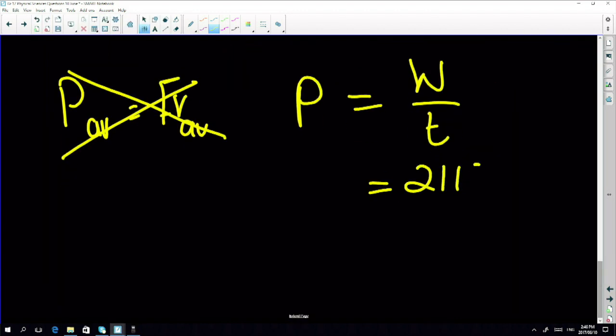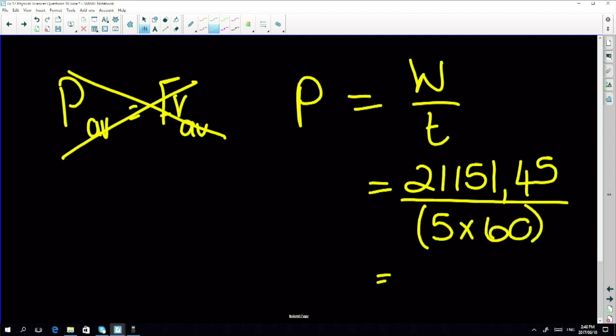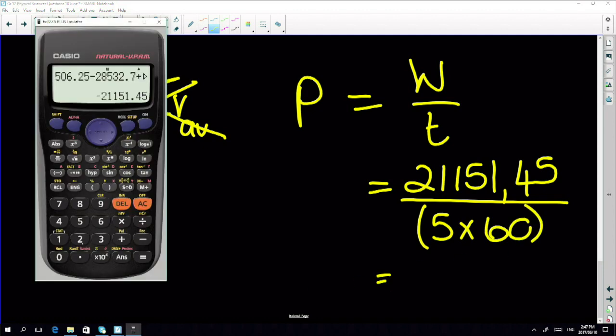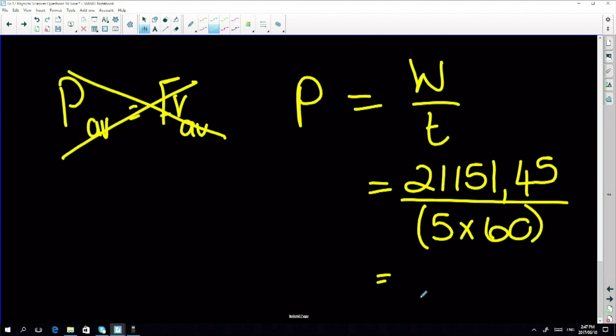I know W is 21,151.45. They said it was five minutes, which must be converted to seconds, so it's five times 60. I'm going to take my 21,151.45 and divide it by five times 60, or 300.